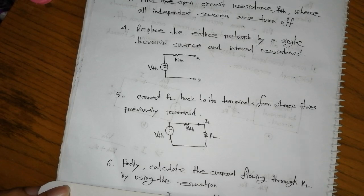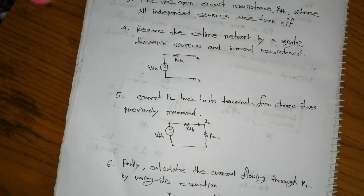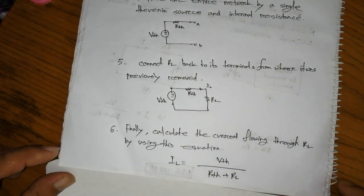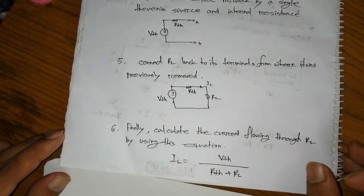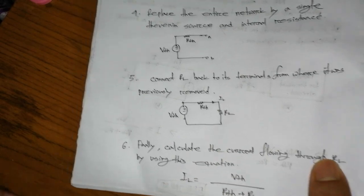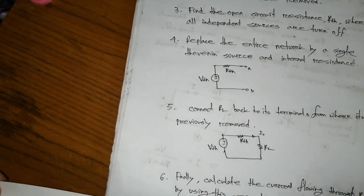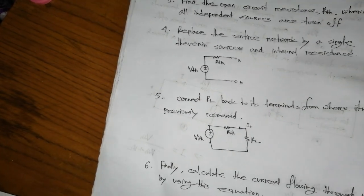Using the equation I = V/R, the current through RL is the total voltage divided by total resistance RTh plus RL.